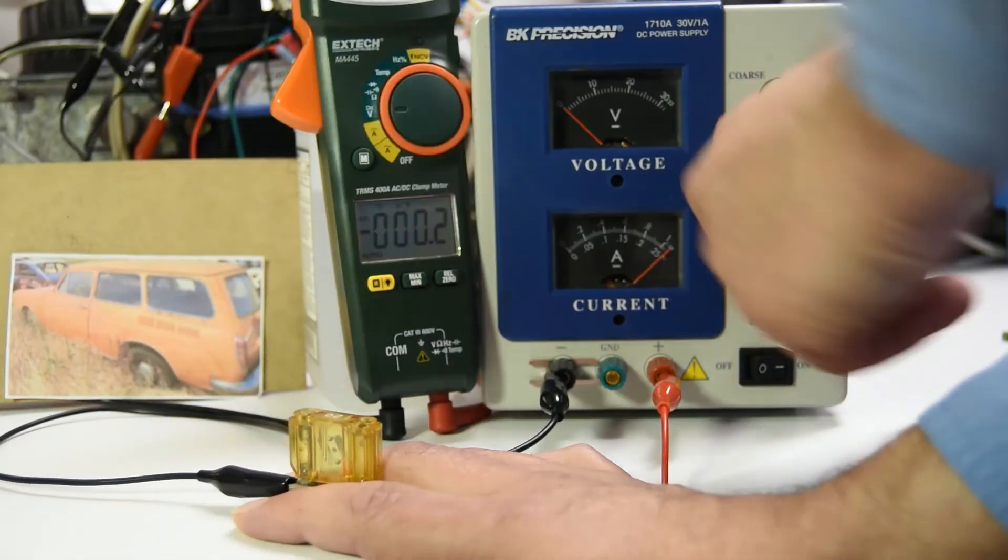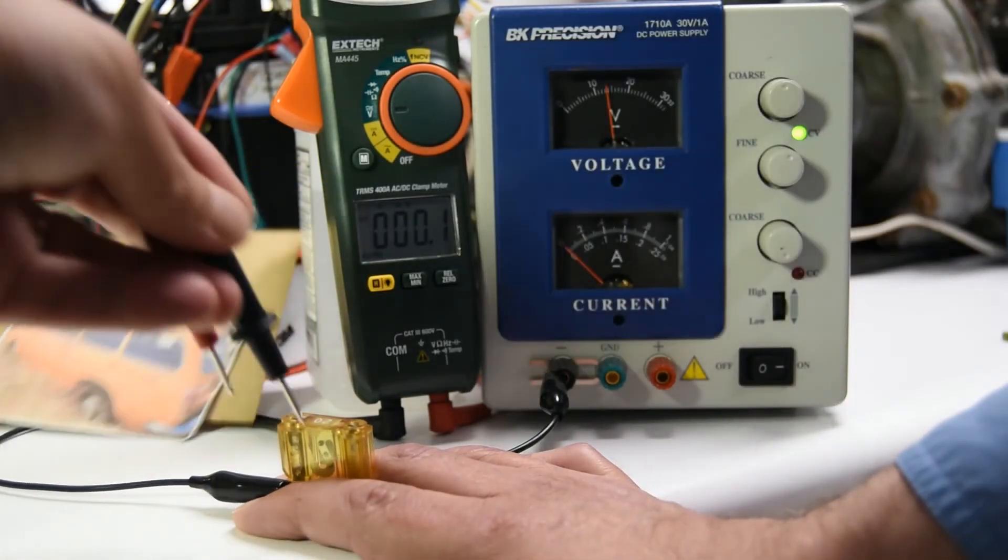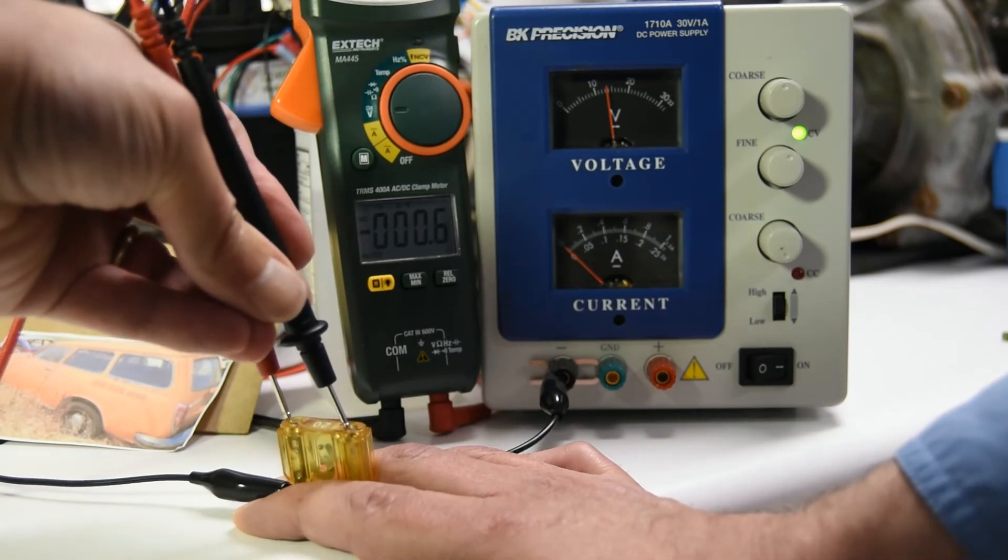So higher current is higher millivolts. By that, you can judge. Let's say, what's zero? Zero is minus 0.06.